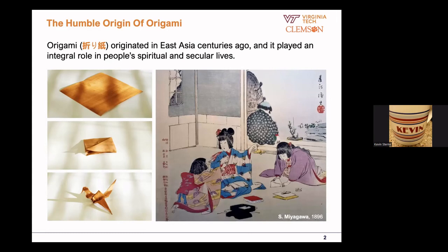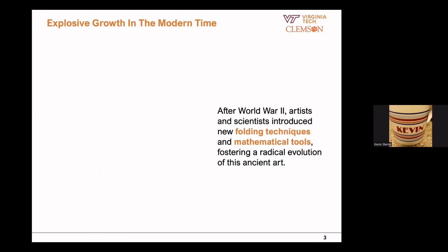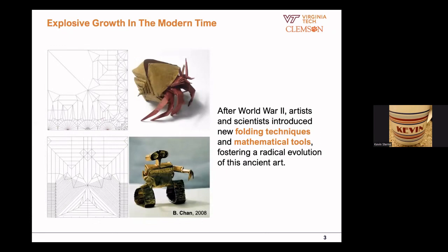This is actually a painting from 1896. Those paper cranes that these Japanese girls were folding more than 100 years ago look exactly the same as the paper cranes we fold today. But that started to change after World War II. A group of wonderful origami mathematicians and artists came up with new folding techniques as well as mathematical theory for folding, and we saw an explosion in terms of the beauty and complexity of this ancient art. This warrior robot and hermit crab are both folded out of one large piece of paper, done without any cutting or gluing.